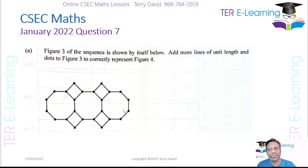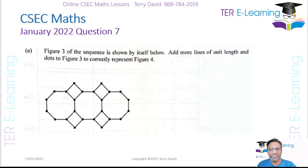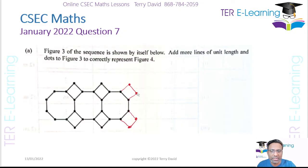Figure 3 of the sequence is shown by itself. Add two more lines of unit length and dots to figure 3 to correctly represent figure 4. If you look at what's happening as you jump from figure 1 to figure 2, the change being made is adding two squares and one octagon. Moving from figure 2 to figure 3, again I'm adding two squares and one octagon. So to get figure 4, I need to add two squares and an octagon. So that's my figure 4 here — I'm adding two squares and an octagon. That's my answer there.